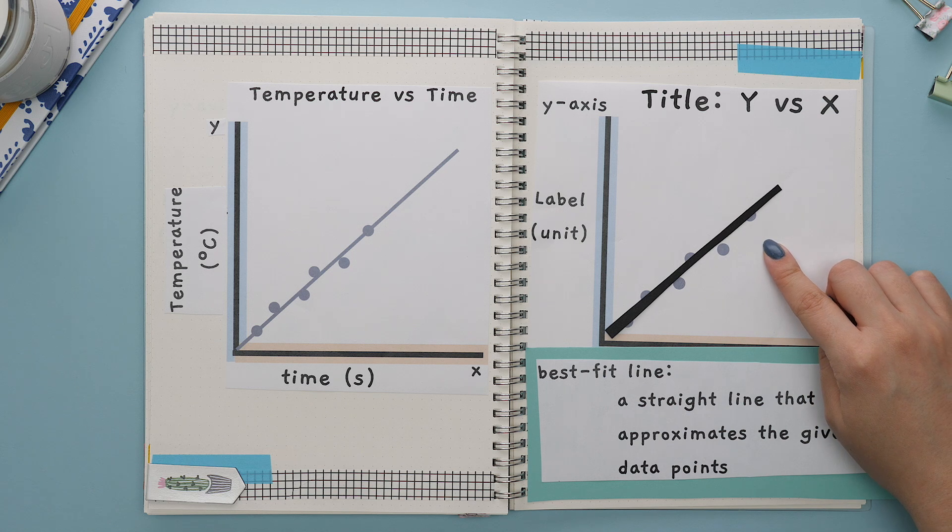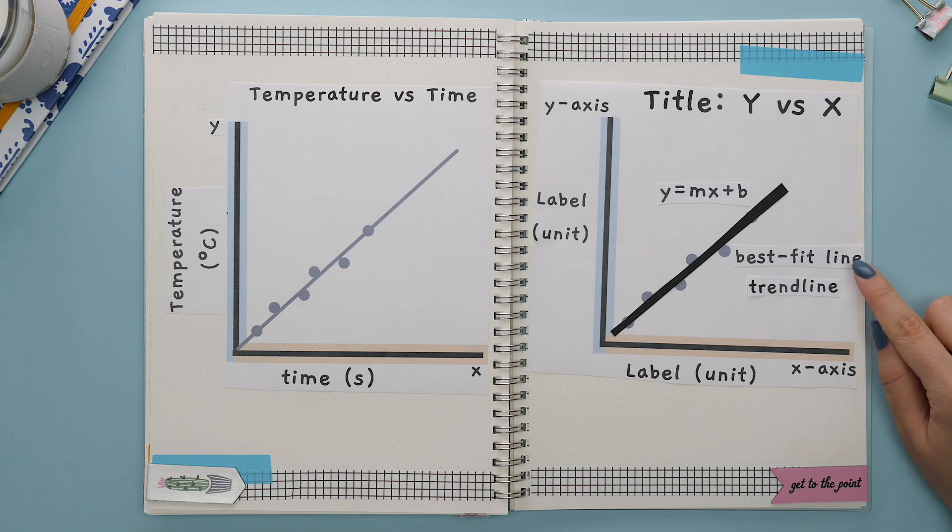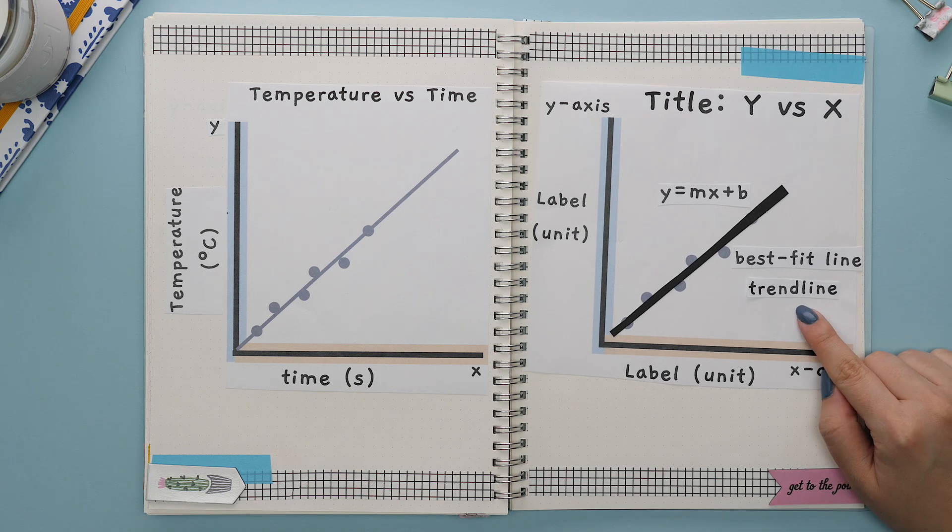This, of course, depends on your data. Luckily, most graphing software will create the best fit line for you. You may also see the best fit line referred to as the trend line.